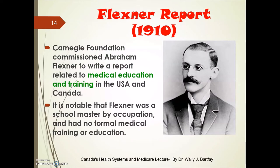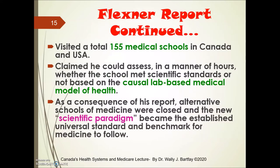The Carnegie Foundation commissioned Abraham Flexner to write a report related to medical education and training in the United States and Canada. It is notable that Flexner was a schoolmaster or principal by occupation and had no formal medical education or training whatsoever. He visited a total of 155 medical schools in Canada and the United States, and claimed he could assess — literally in a matter of hours — whether the school met scientific standards or not based on the causal lab-based medical model of health. As a consequence of his report, alternative schools of medicine were closed, and the new scientific paradigm became the established universal standard and benchmark for medicine to follow.